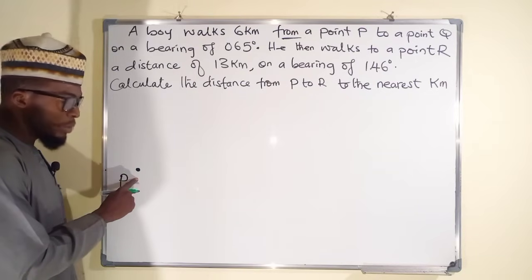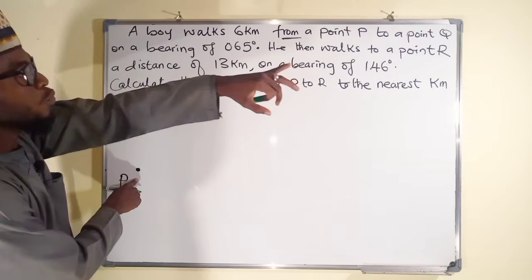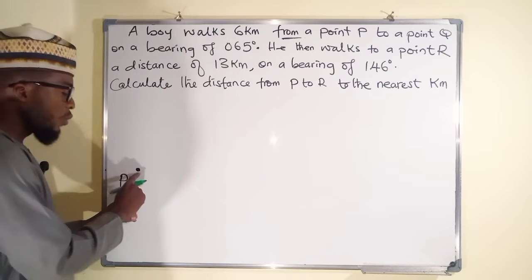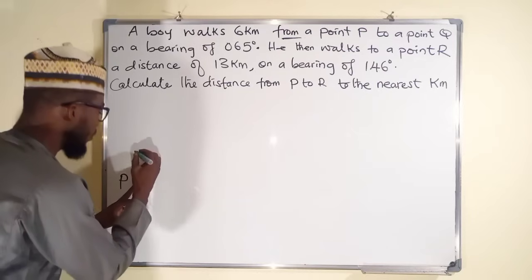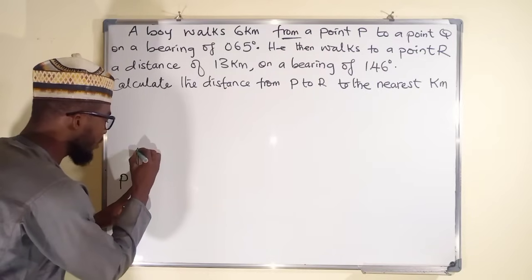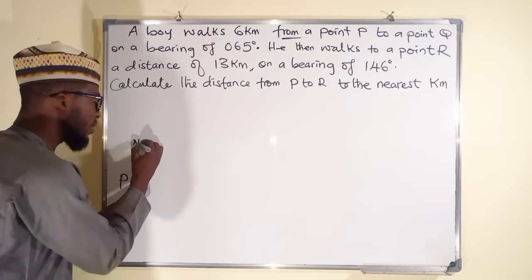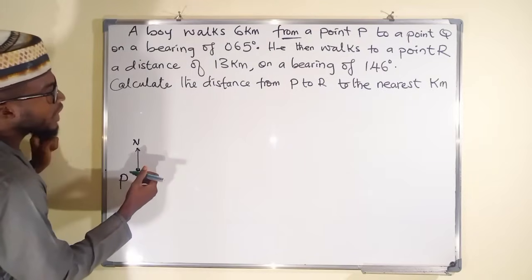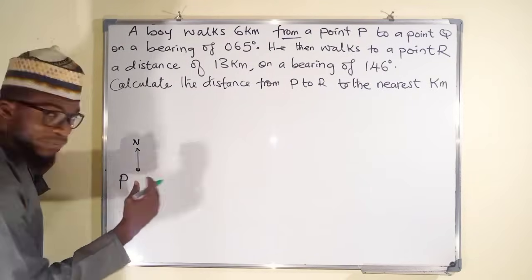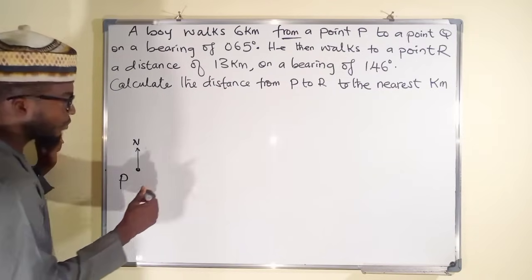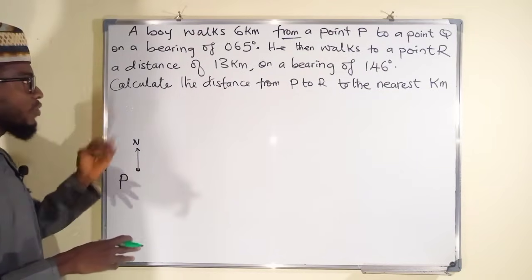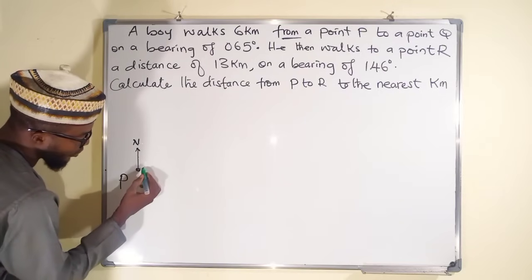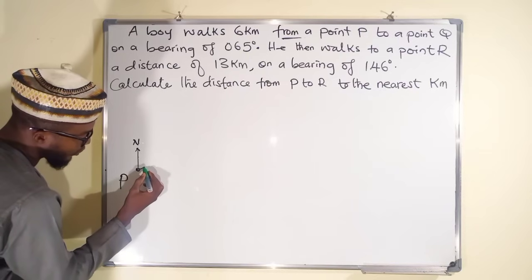The first location should be P — this is his initial stage, where he started walking. He started walking from P moving to Q on a bearing of 65 degrees. We are going to construct 65 degrees roughly from P. This is our north pole, because all angles are measured from north clockwise. From here we construct an angle of 65 degrees — it must not be perfect, but you have to be careful while constructing these angles.